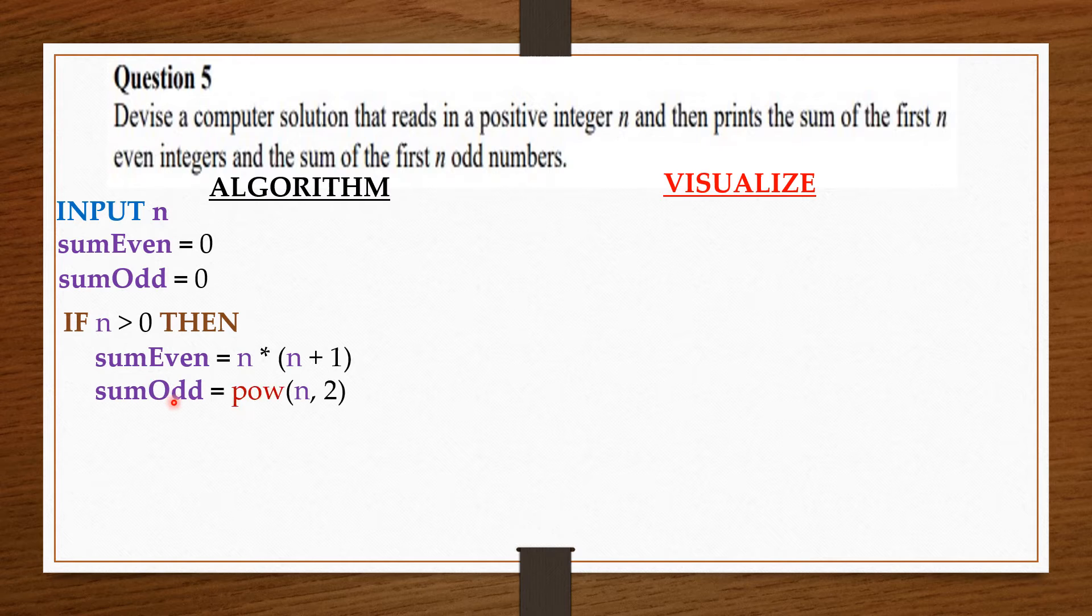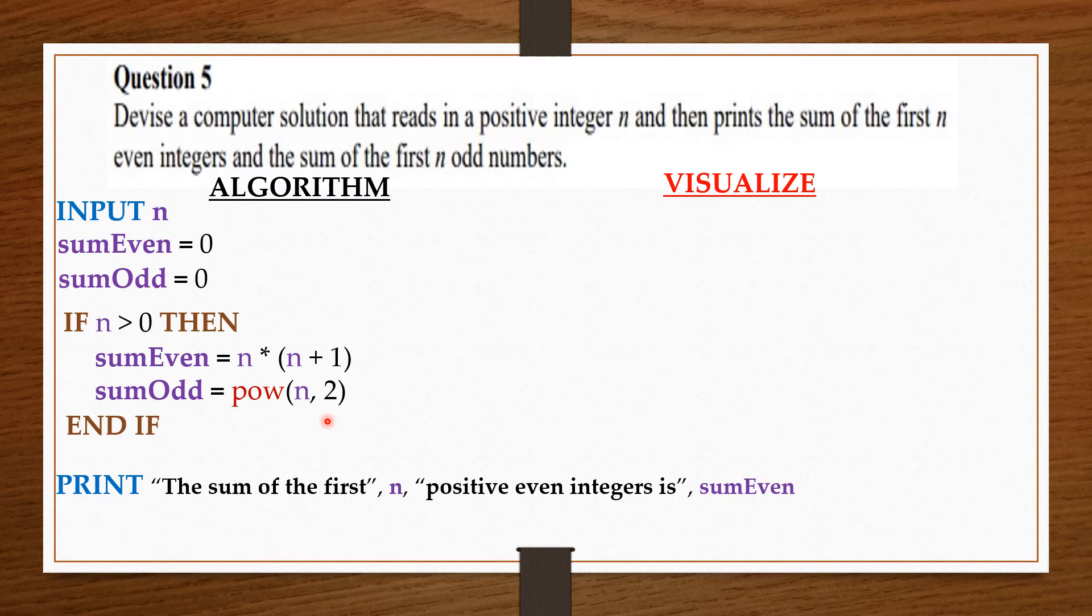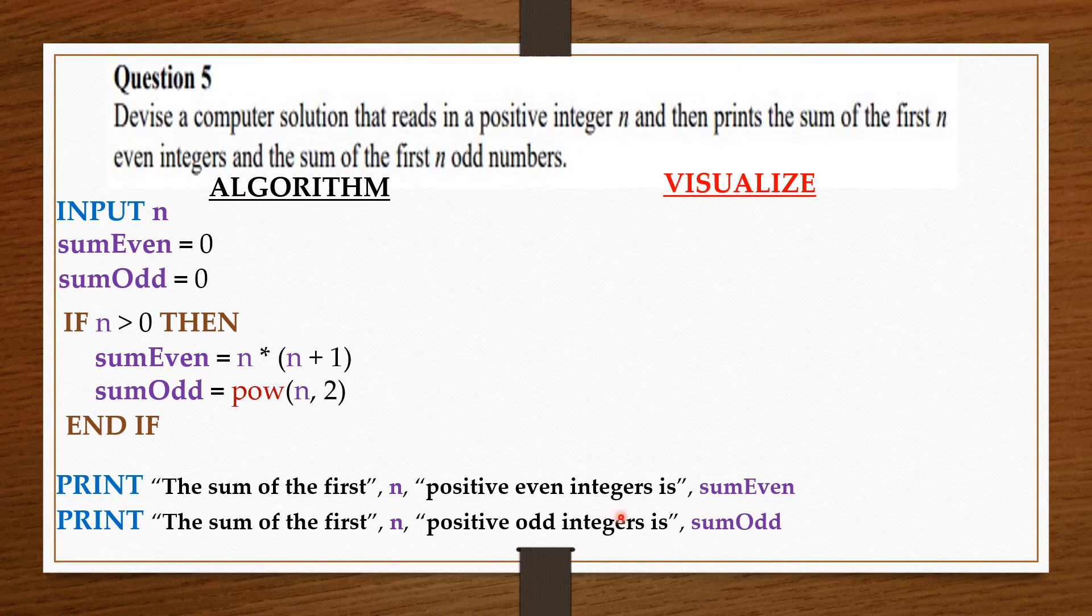And the sum of the first odd numbers equals n to the power 2. Now from here we print our results: the sum of first n positive even integers and the sum of the first n positive odd integers.